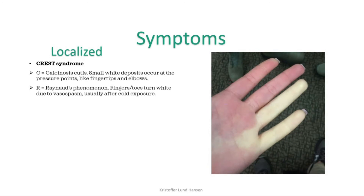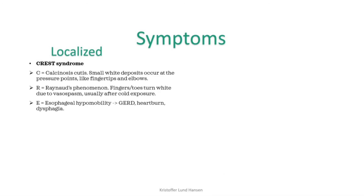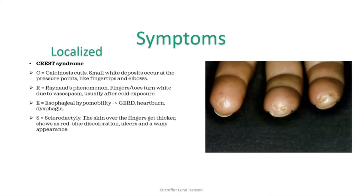R stands for Raynaud's phenomenon. In 90% of cases it precedes all the other symptoms. Raynaud's occurs usually after stress or cold exposure, which causes vasospasm in the fingers or toes, leading to temporary ischemia, and can be seen as the fingers turn white. E stands for esophageal hypomobility. Fibrosis and atrophy of the smooth muscle leads to reduced ability of the esophagus to move, causing symptoms like heartburn and dysphagia. S stands for sclerodactyly — thickening of the skin over the fingers, leading to increased susceptibility to ulcers, a waxy appearance, and possibly a red-blue discoloration.